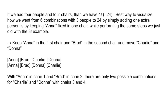If we had 4 people and 4 chairs, then we have 4 factorial, which is equal to 24. The best way to visualize how we went from 6 combinations with 3 people to 24 by adding 1 extra person is by keeping Anna fixed in 1 chair while performing the same steps we just did with the 3 factorial example.